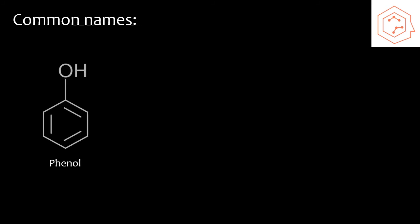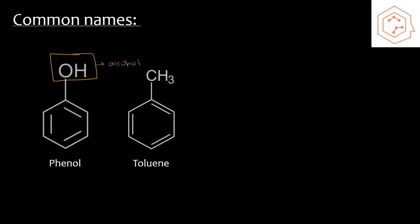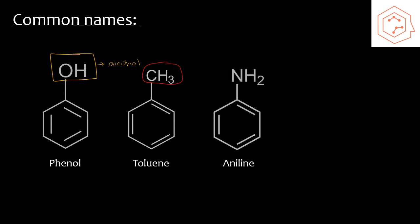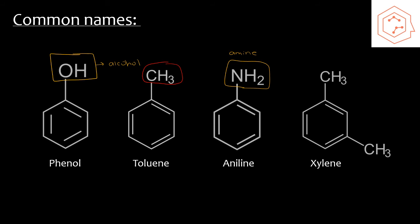I also want to introduce some structures that are common enough to have their own special names, as well as some functional groups we'll work with later. First, phenol is a benzene ring bonded to an OH group, which is also referred to as an alcohol group. Toluene is benzene bonded to one methyl group. Aniline has benzene bonded to an NH2 group, also called an amine group. Finally, xylene is similar to toluene but has two methyl groups bonded to benzene. Xylene can appear in the ortho, meta, or para position, but is most stable in the meta position.